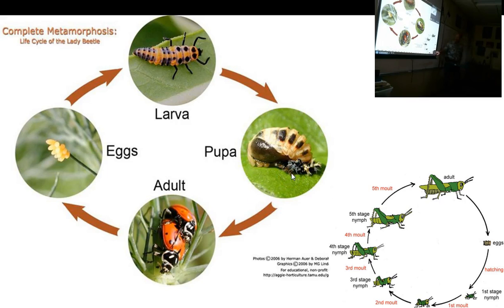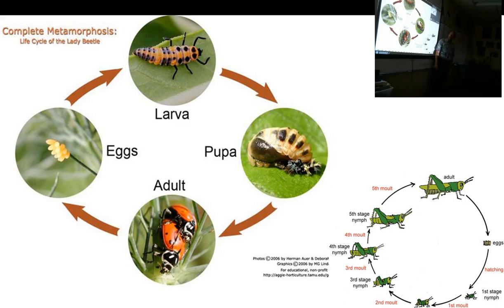Grasshoppers have incomplete metamorphosis — the adult and the nymph look a lot alike; it just gets bigger and develops wings as an adult, molting four or five times on its way to adulthood. Whereas in complete metamorphosis, the ladybug looks nothing like its larval stage. The pupa stage is it cocooning and turning into the adult ladybug. Complete metamorphosis versus incomplete metamorphosis.